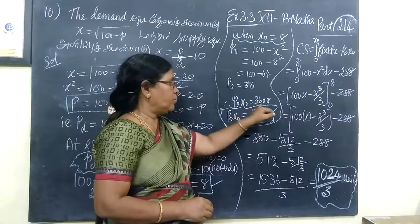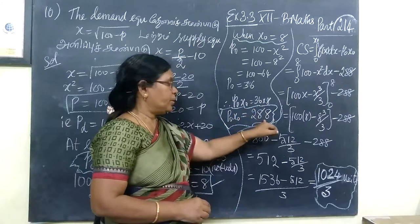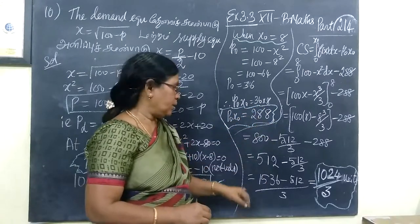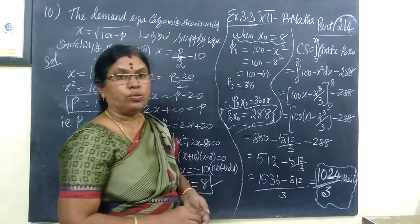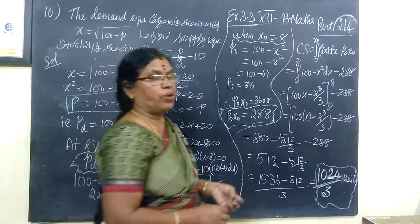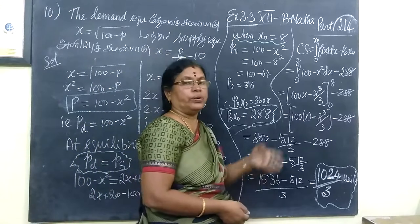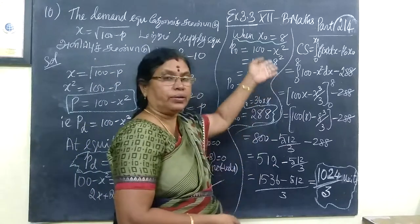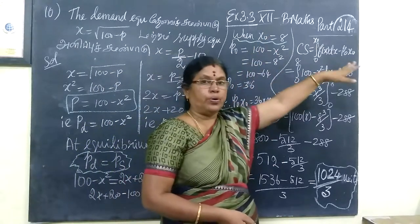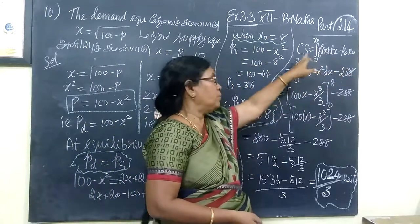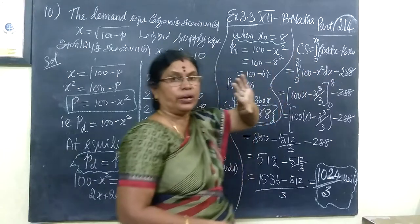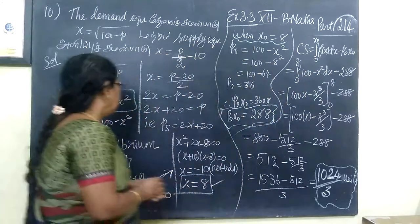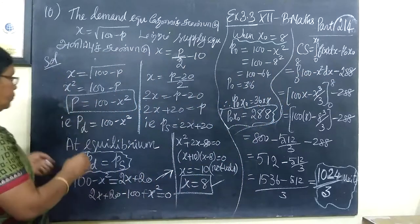The consumer surplus formula of the unit — this is the value of your unit and your unit, so the consumer surplus formula is the benefit of each unit of each unit. The demand function.